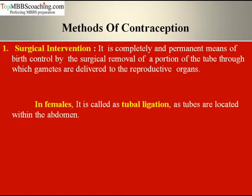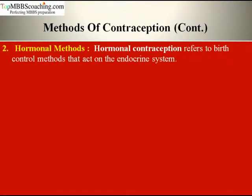In females, surgical intervention is called tubal ligation, which involves the removal of a section of each of the two fallopian tubes through which the secondary oocyte travels to the uterus. In males, the operation involves the removal of a portion of the vas deferens — the tube through which sperm travel to the penis — and this procedure is known as vasectomy.